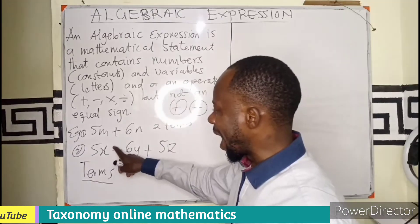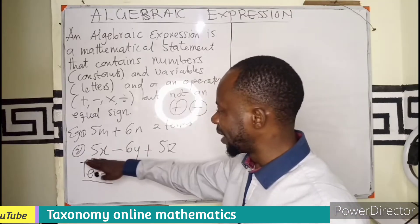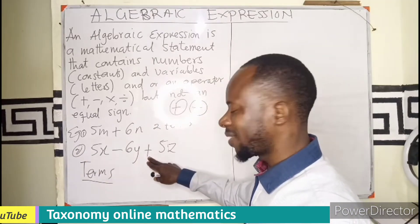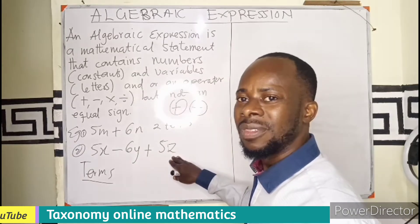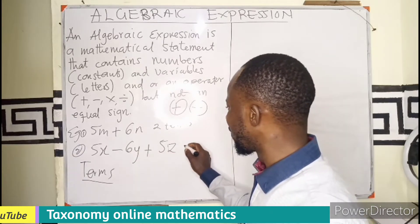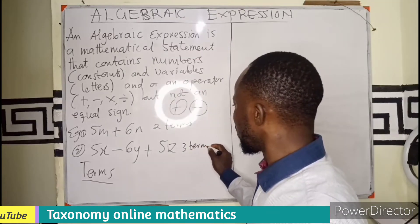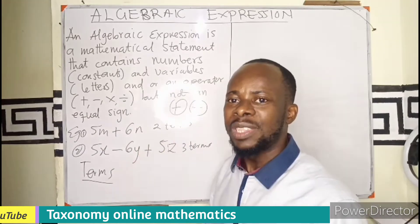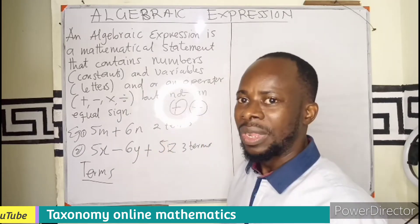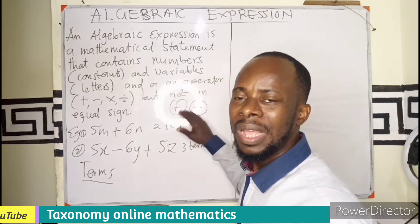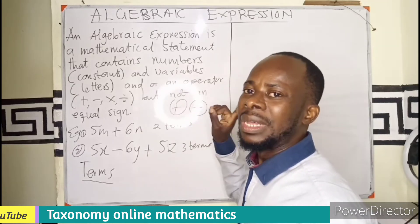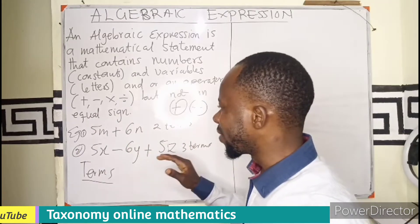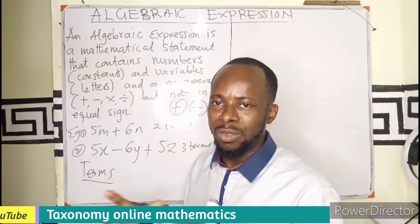In the second example, I have a minus separating 5X and 6Y, and a plus that separates 6Y and 5Z. So in this case, I have three terms. The terms are separated by mathematical operators, and these operators are only plus and minus — addition and subtraction.